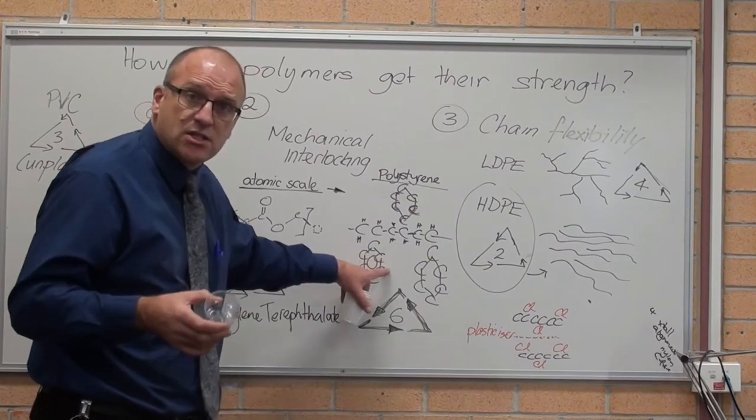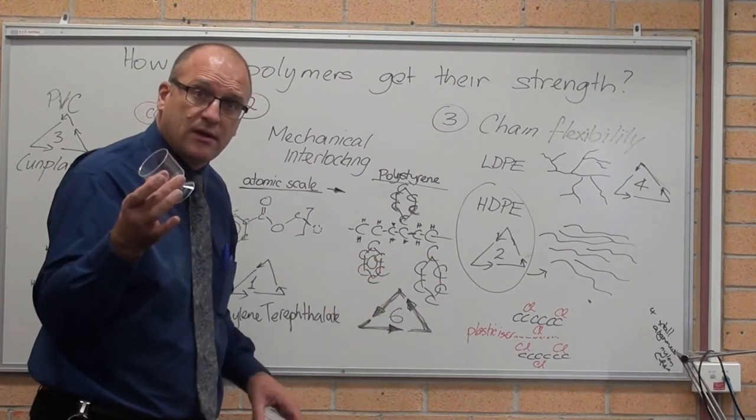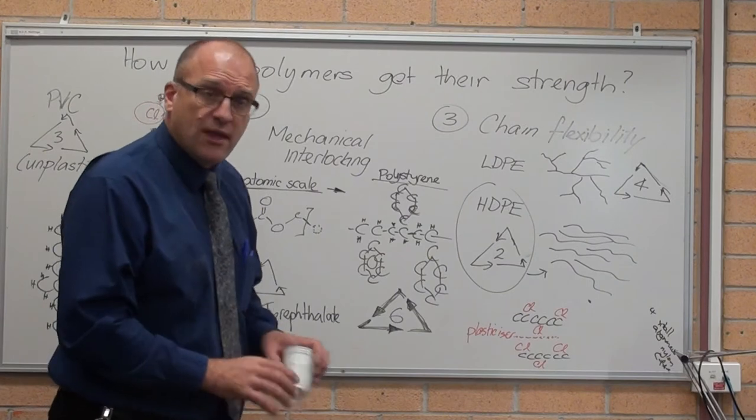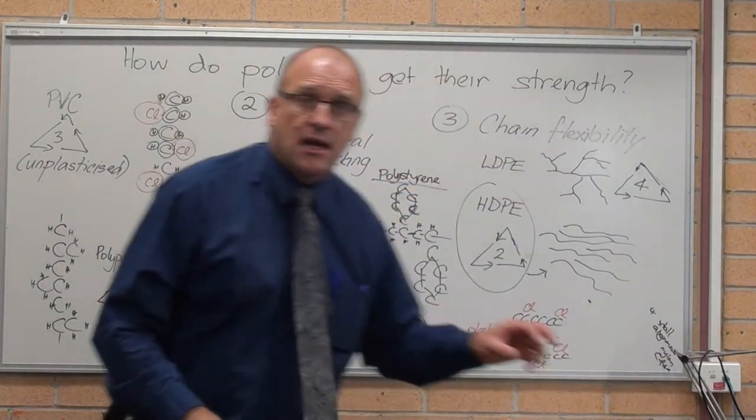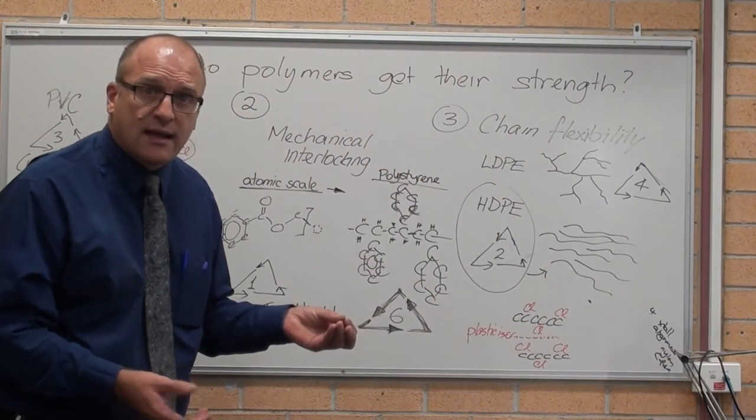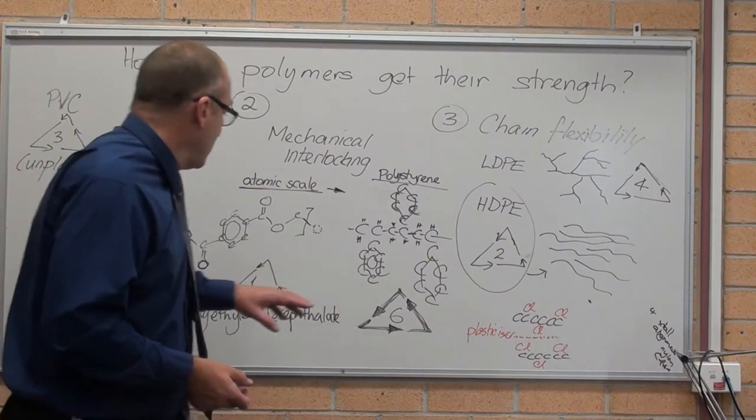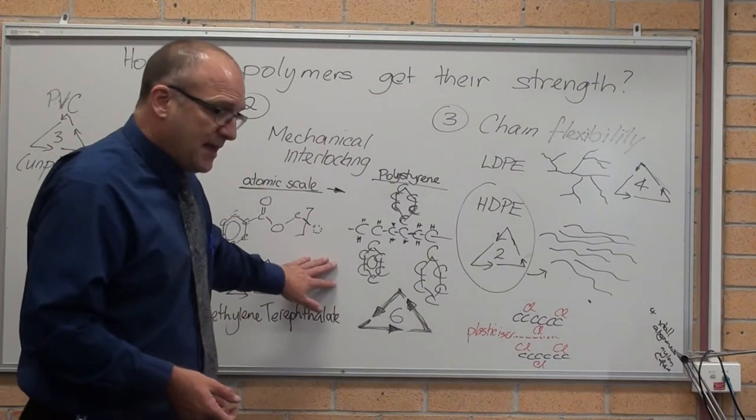Polystyrene is a rigid thermoplastic at room temperature. When you heat it up, the chains can slide past each other. When you cool it down, it's rigid. That is your drinking cups. That is the cheap plastic tableware you get, disposable tableware. So, that's mechanical interlocking.